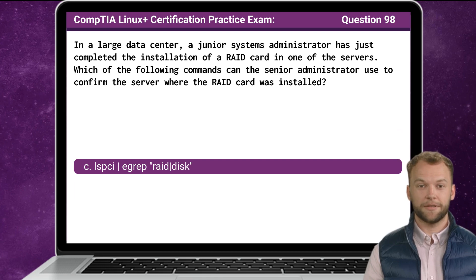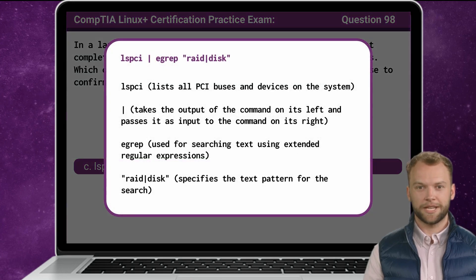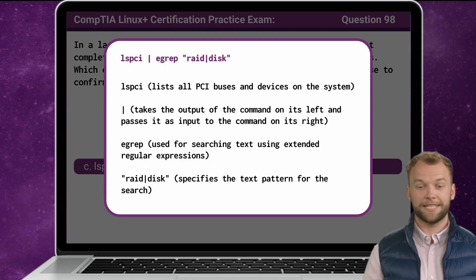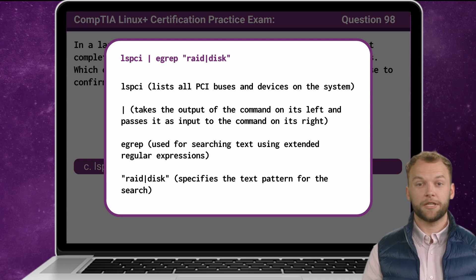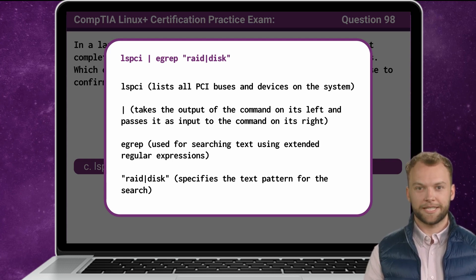The answer is C. Now that we know the answer, let's break it down. The lspci command lists all PCI buses and devices on the system. It provides detailed information about the hardware devices connected to the PCI bus, including RAID cards and disk controllers. The pipe symbol takes the output of lspci and passes it as input to the command on its right.